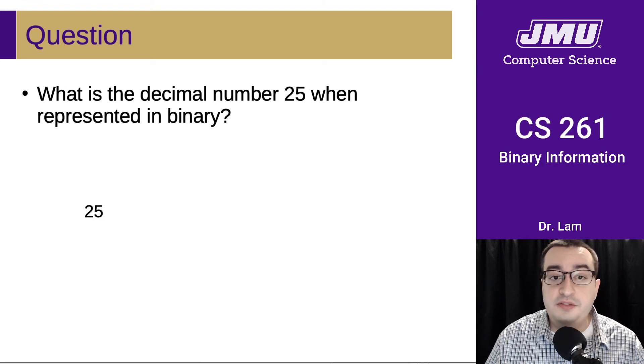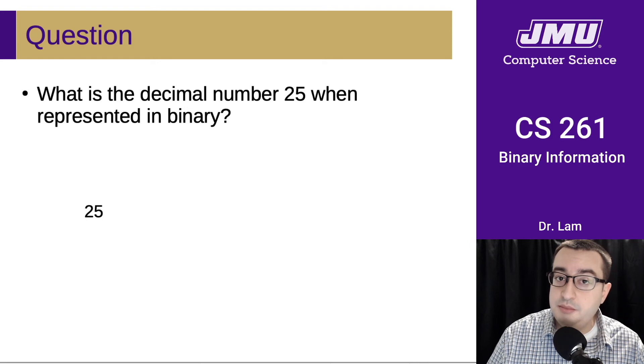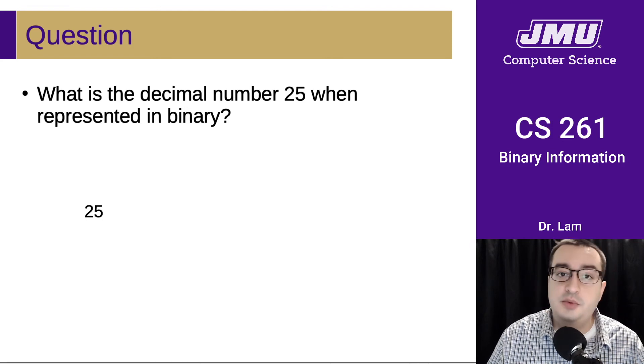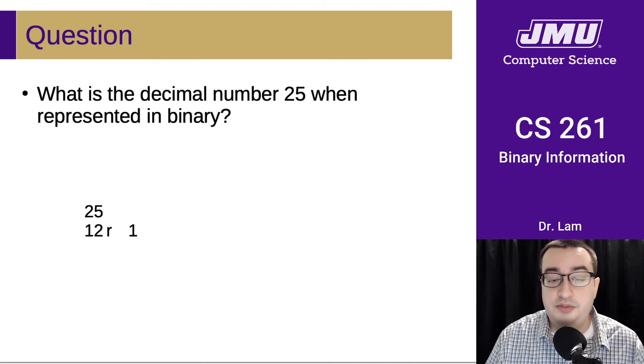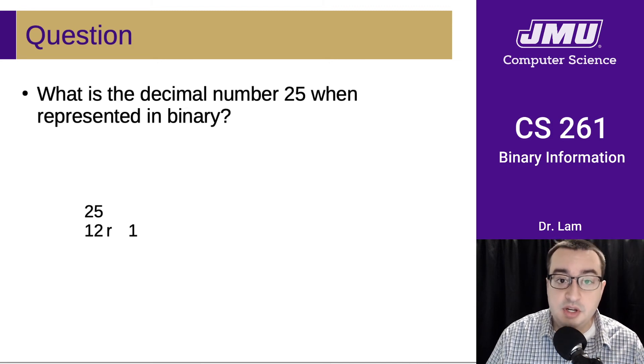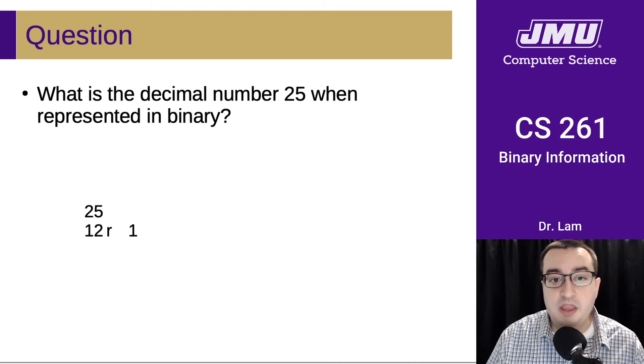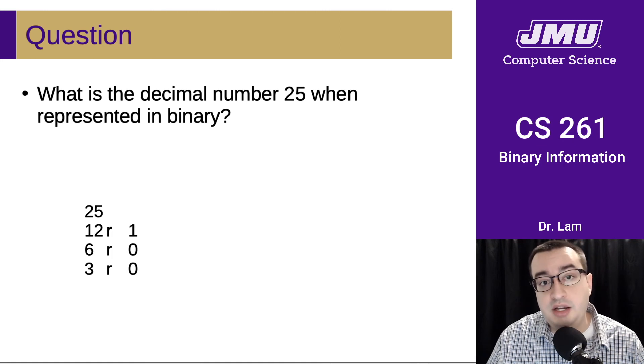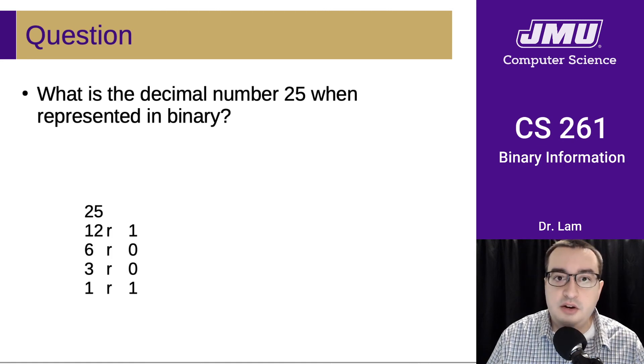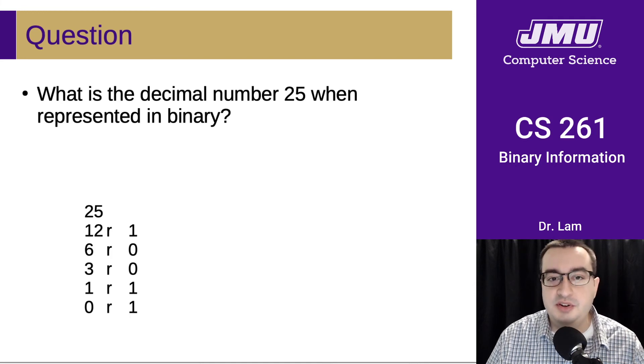25 is the original number. We divide by 2. This is odd, so we subtract 1 as the remainder, leaving 24. 24 divided by 2 is 12, so 25 divided by 2 is 12 remainder 1. 12 is even, so that's 6 remainder 0. 6 divided by 2 is 3 remainder 0. Now we're back to an odd number, so 3 divided by 2 is 1 remainder 1. 1 divided by 2 is 0 remainder 1.